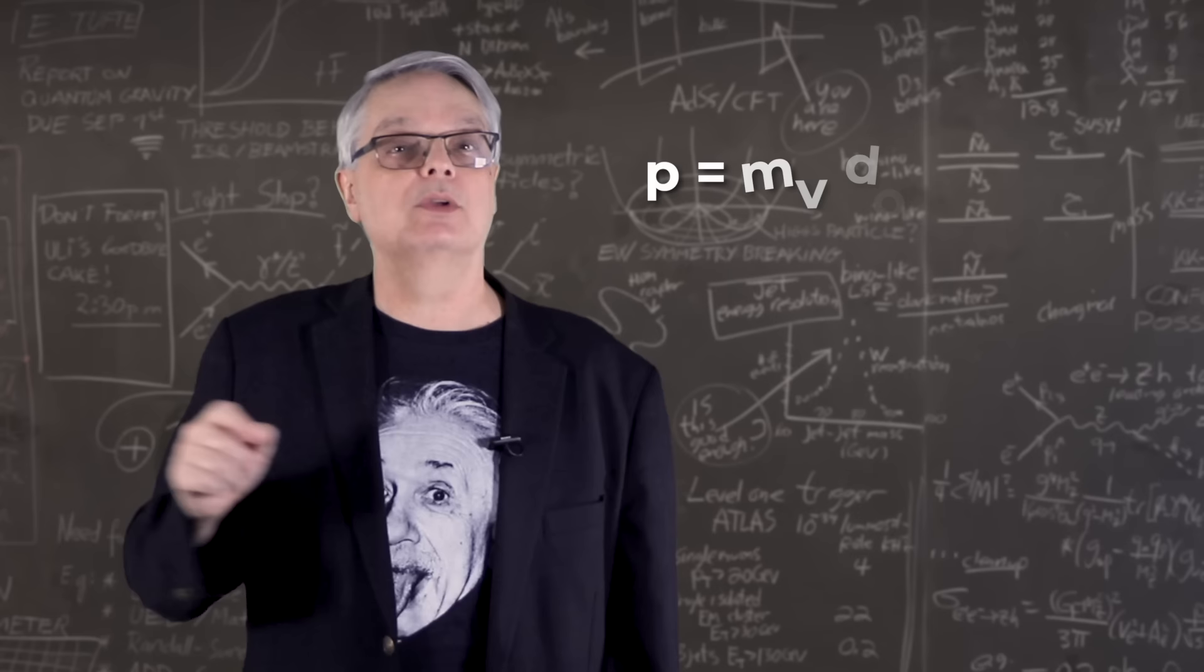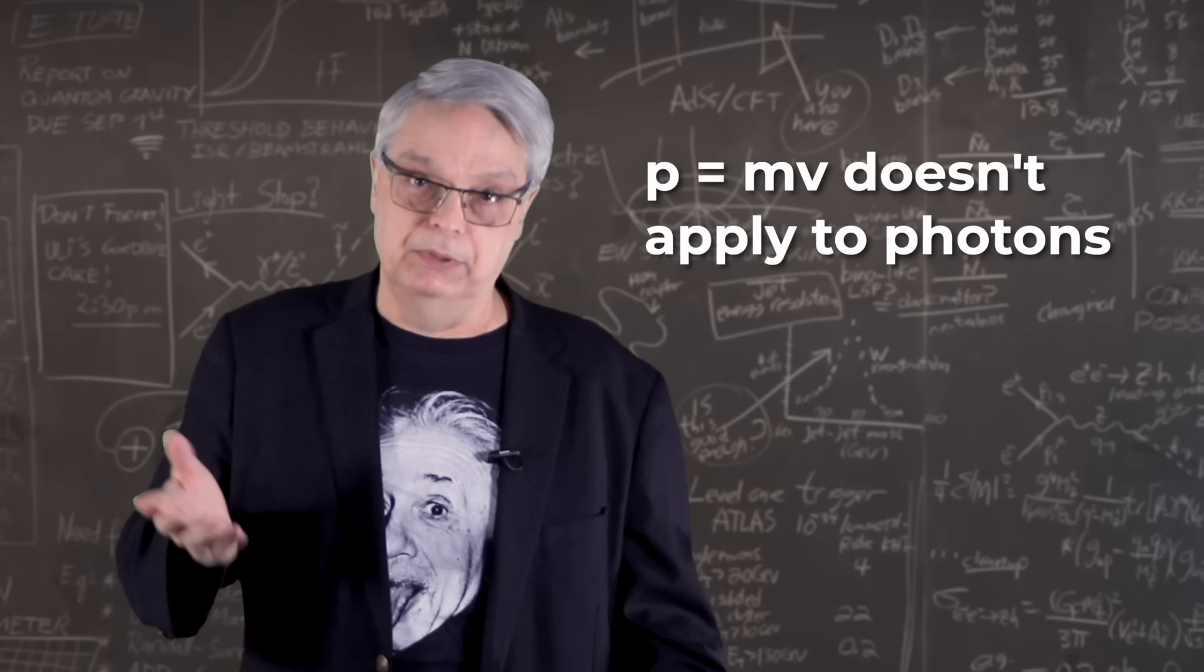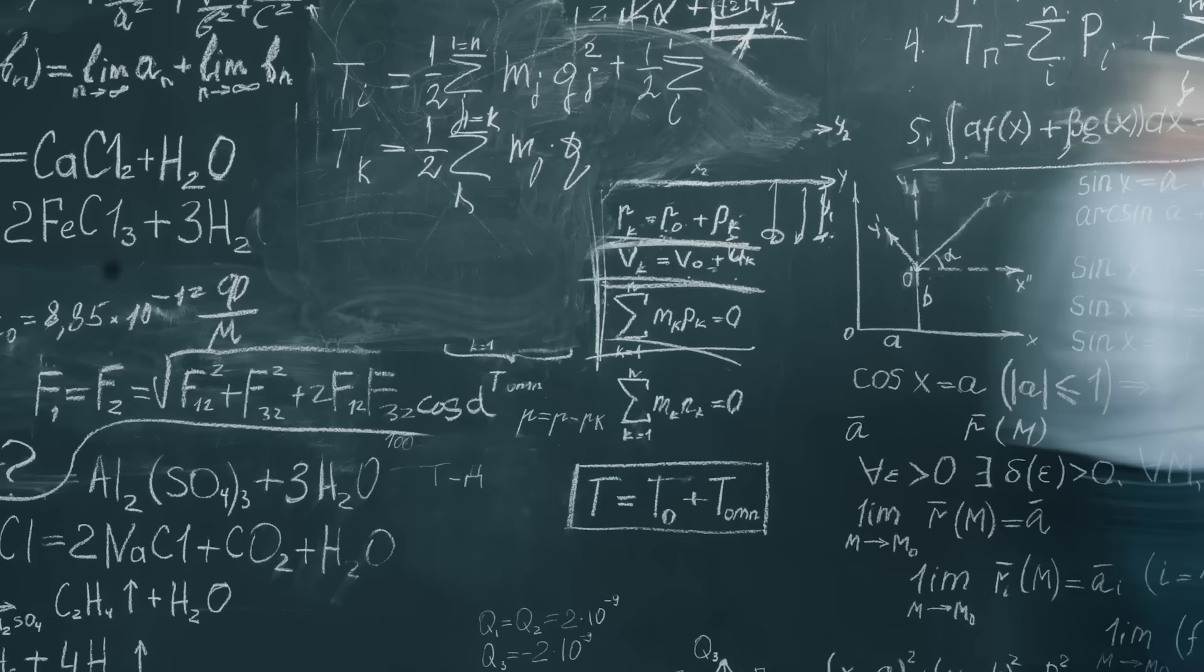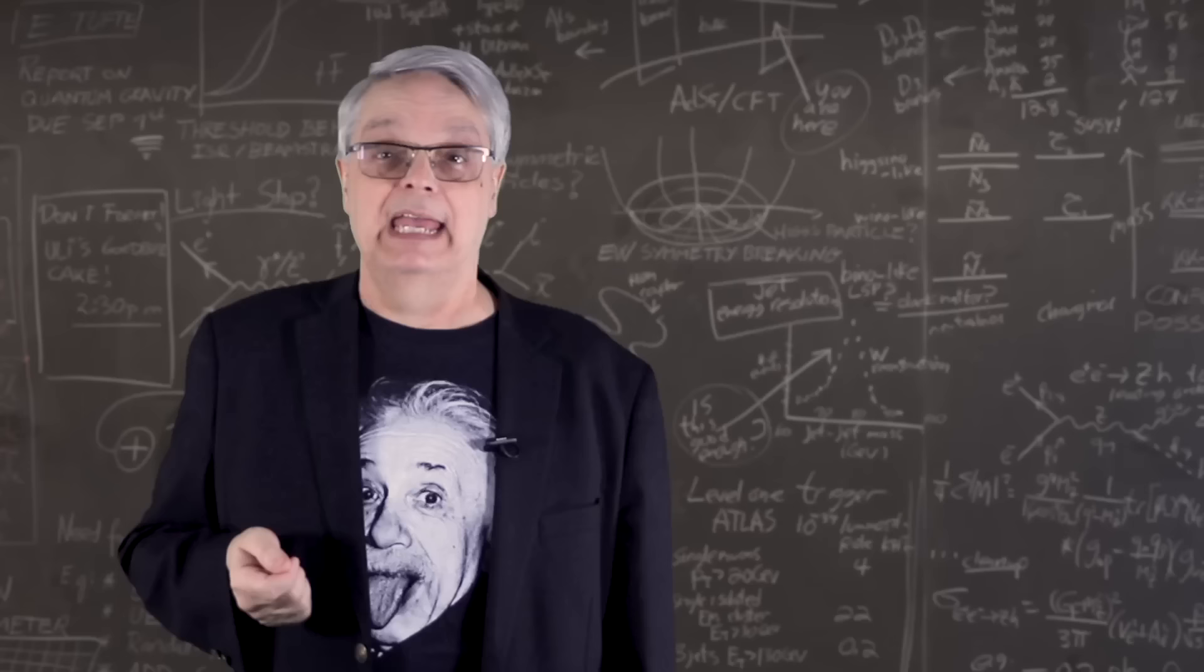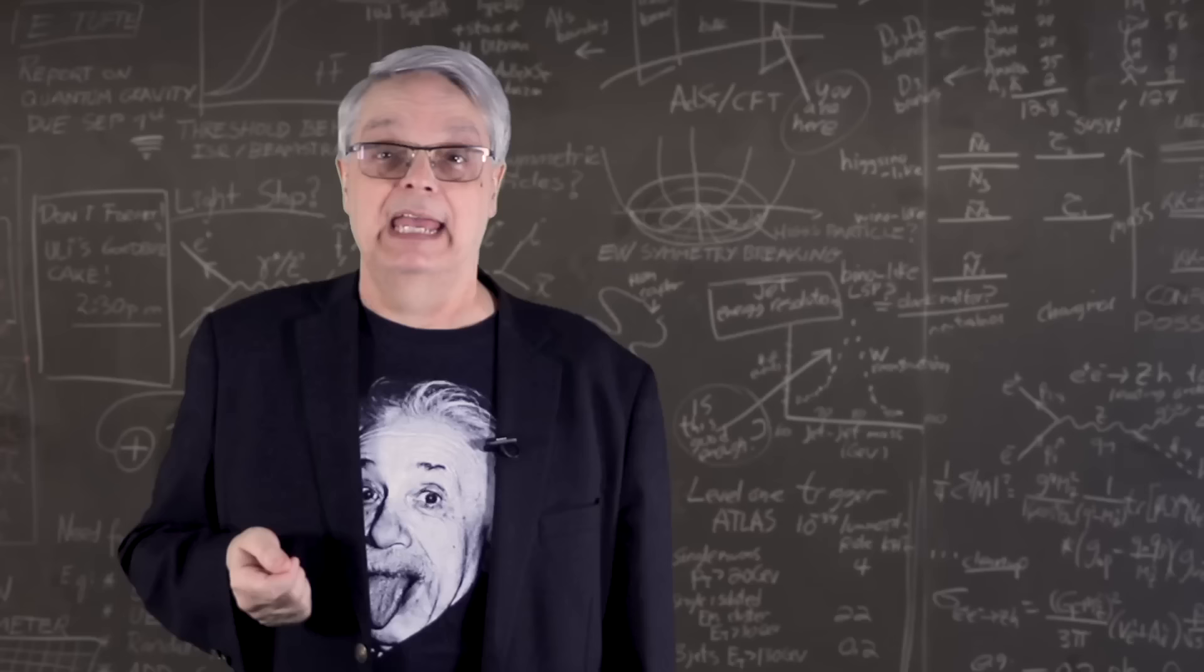The bottom line is that the familiar equation, p equals mv, just doesn't apply for massless photons. And the question of photon momentum, well, completely sensible, arises from using the equation in a situation where it was never intended to be. I could spend a long time showing you how you can manipulate this general equation that equates energy, momentum, and mass. But I will leave that for you to play around with if you want. And I put a link in the description to a couple of websites that do a lot of the heavy lifting for you.